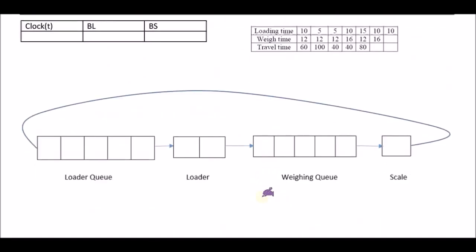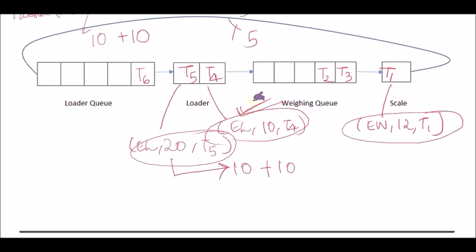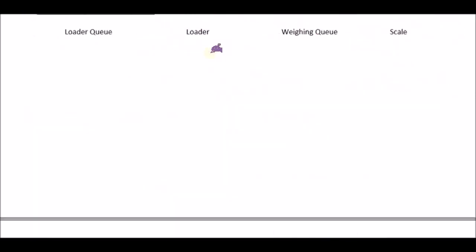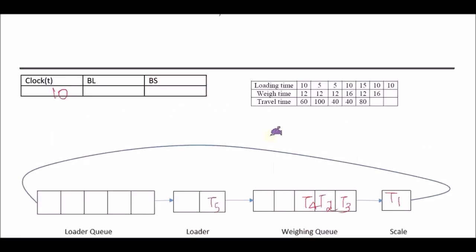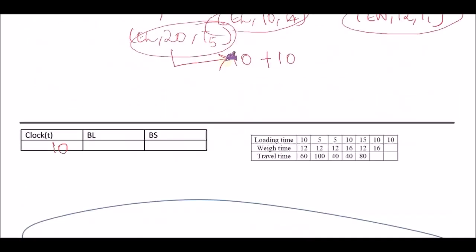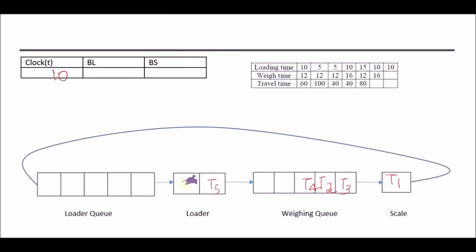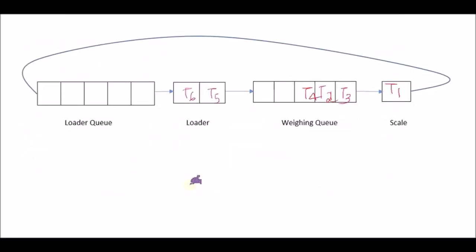In the next set, we write clock T again. Since we're choosing this event, T4 is going to finish loading, so it comes to the weighing queue. The loader positions remain the same, and since one loader is empty, a new truck takes its place. So T1 stays here. In the weighing queue it's T3, T2, T4. T5 is already in the loader, and the new entry T6 comes in from the queue.